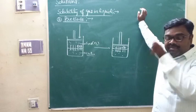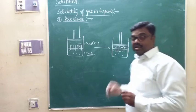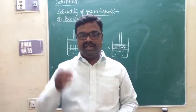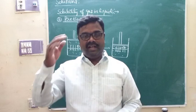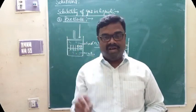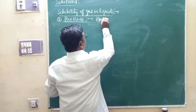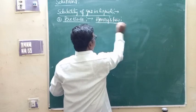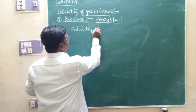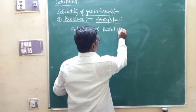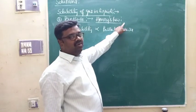The effect of pressure on solubility of gas in liquid is quantitatively explained by Henry's Law. Henry established a relationship between solubility of gas in liquid and pressure over the surface of the liquid. According to Henry's Law, solubility of a gas is directly proportional to the partial pressure of the gas over the surface of a liquid.